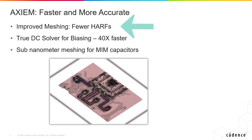We have improved meshing. There are fewer HARFs. HARF is a high aspect ratio facet — think long skinny triangle. They're bad, they hurt your mesh, they hurt your simulation, and we have done a better job of getting rid of them. This lower picture shows a mesh; we'll take a look at that in a minute in the software. We also have true DC solver capability and better vertical resolution for MIM capacitors on chips.